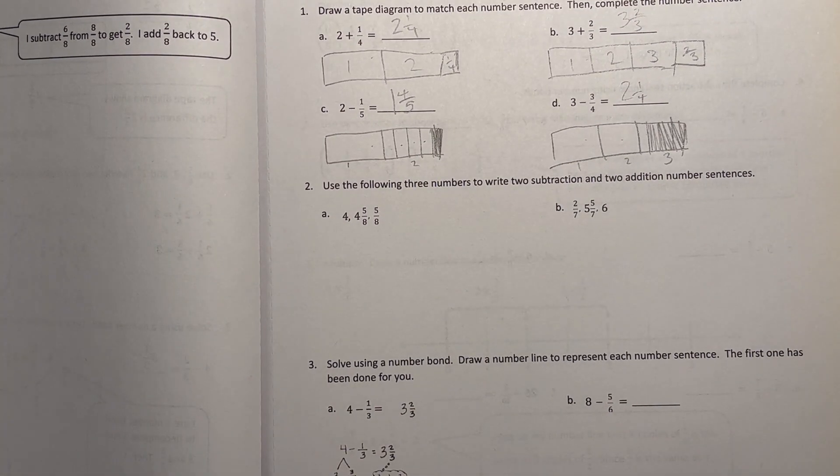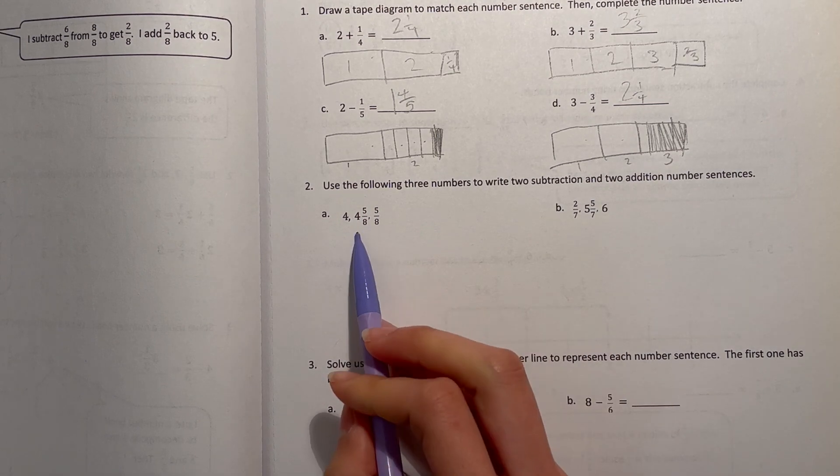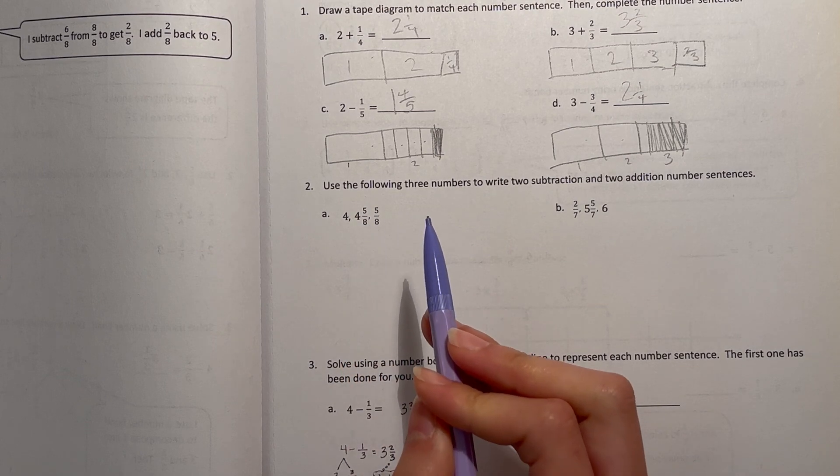All right, now number 2. Use the following 3 numbers to write 2 subtraction and 2 addition number sentences. All right, so first one we have 4, 4 and 5 eighths, and 5 eighths.